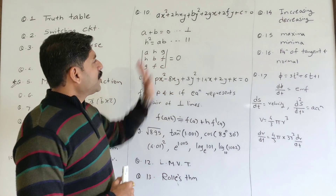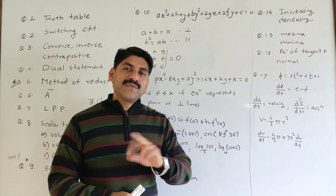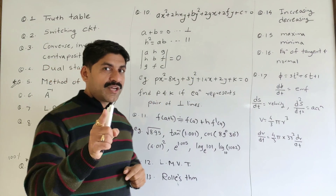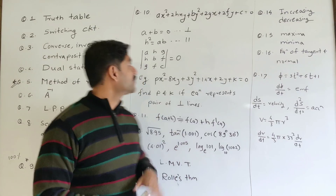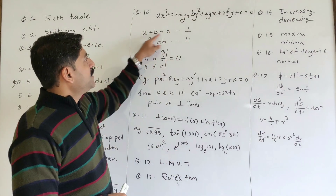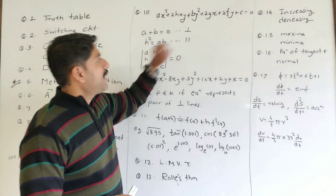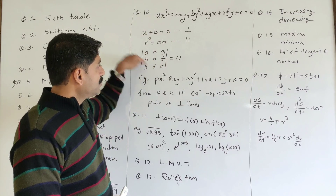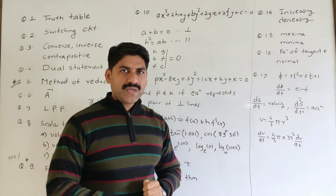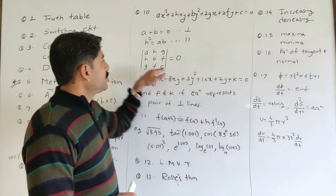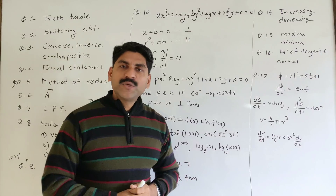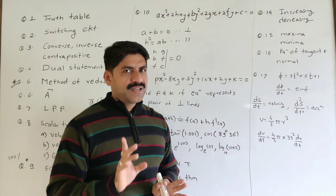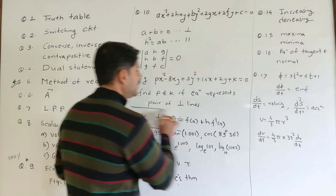For pair of straight lines, there are many theorems. I will give you an equation and an example — you can give your answer in the comment box. In the equation, if a plus b equals 0, the lines will be perpendicular. If h-square equals ab, the lines are parallel. Compare the equation, find the value, and substitute it. If it equals 0, it is a pair of lines. I will solve the determinant and the case values. There are 4 problems to solve.